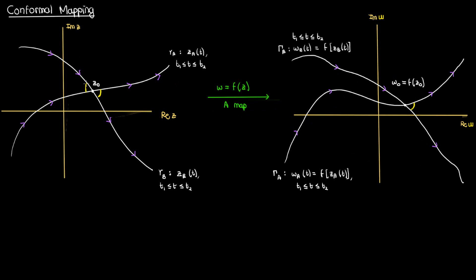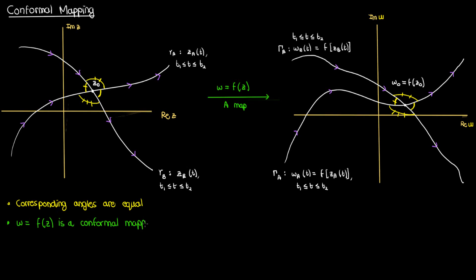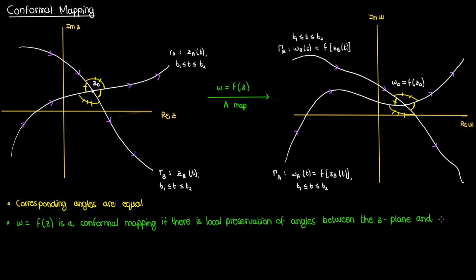The function f of z is said to be a conformal mapping or conformal transformation if the angles between curves in the z-plane are equal to the angles between curves in the w-plane. In other words, a conformal mapping is a mapping in which there is preservation of angles locally, meaning in the neighborhood of the individual point z naught. Basically a conformal mapping is one in which the angle in the z-plane conforms to the angle in the w-plane.